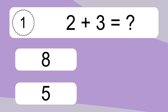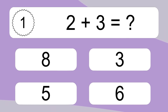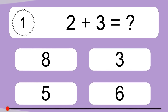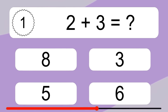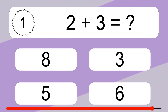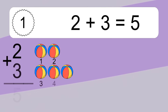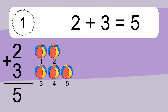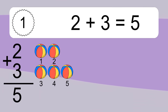2 plus 3 equals what? 2 plus 3 equals 5. Let's count it: 1, 2, 3, 4, 5.